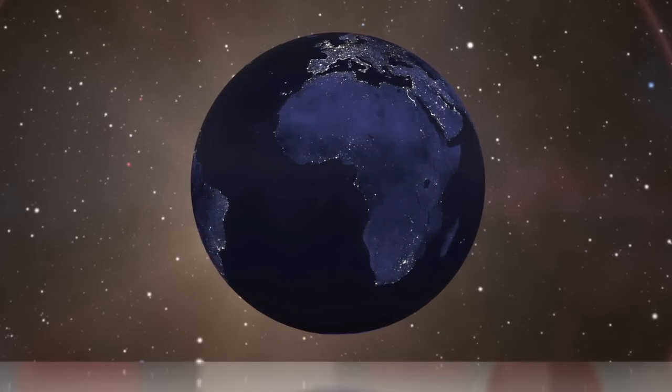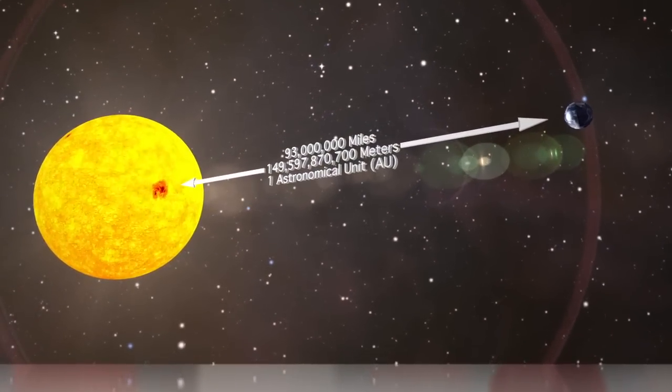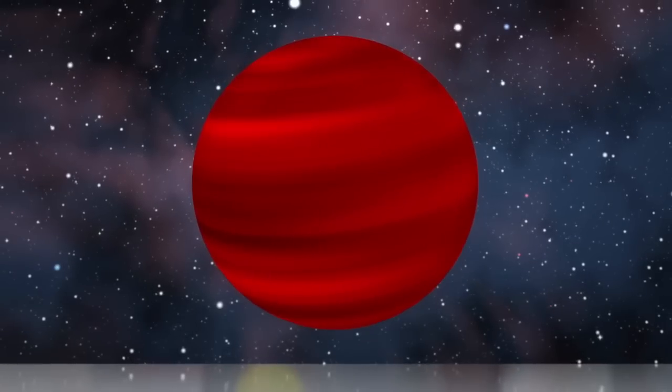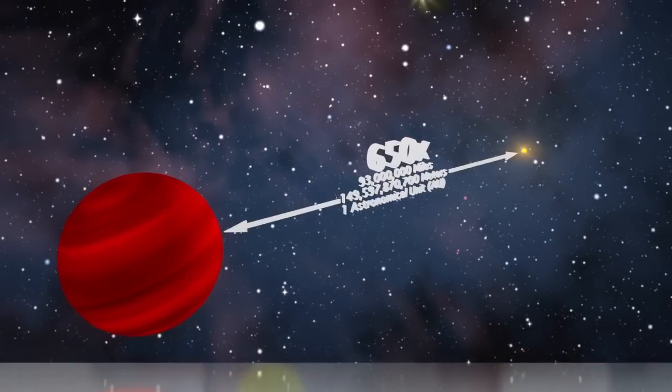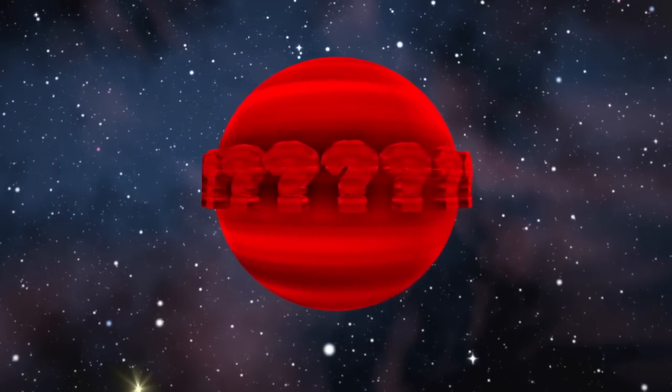On average, Earth orbits about 93 million miles from the Sun. An international team has now found a planet orbiting 650 times further than that, leading astronomers to wonder how it exists at all.